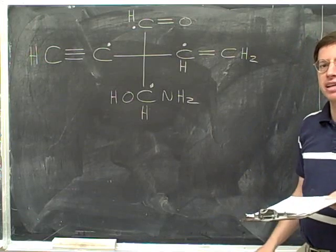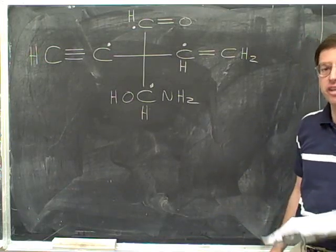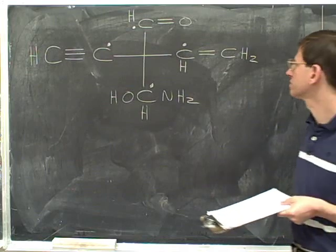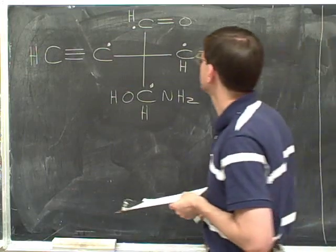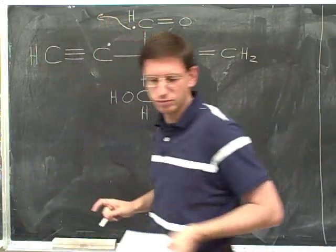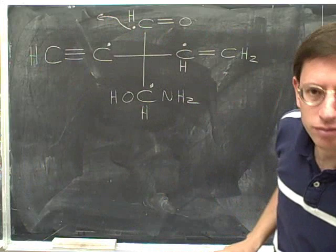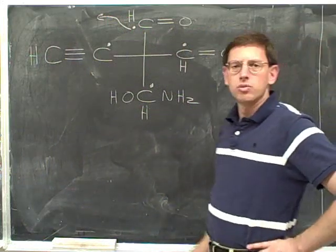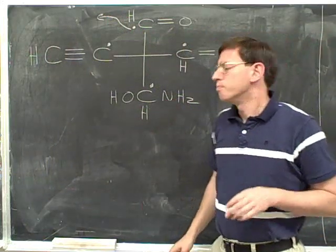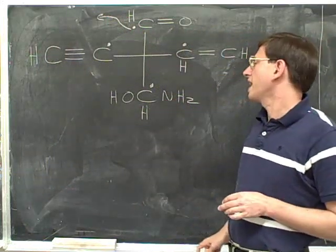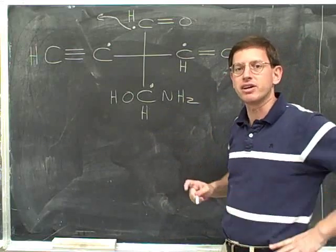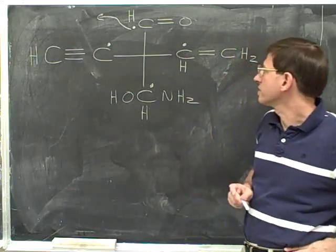So now we have to make a list of the three atoms that each of our dotted atoms are connected to. Now we have some new issues because this is an example where we have double and triple bonds. How can we deal with that?